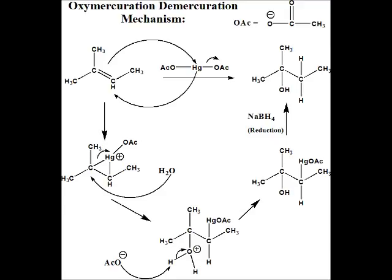Proceeding to the next step, you can very clearly see the anti-addition: we have the mercury on the top and, 180 degrees on the bottom, we have the alcohol. The second step uses NaBH₄, which is sodium borohydride. NaBH₄ produces a hydride ion — H minus — which is fairly rare compared to H plus. This hydride ion performs a reduction in which the mercury ion is removed from the compound and a hydrogen is put in its place.